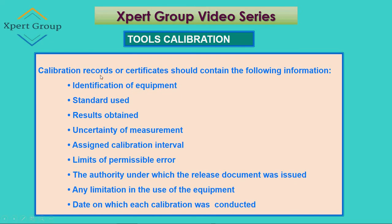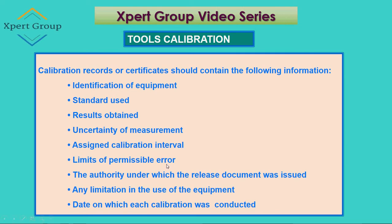Calibration records or certificates should contain the following information: identification of equipment — what type of equipment it is and its specific identification; the standard used — on which standard the calibration is based; result obtained — what the results were after and before the calibration; uncertainty of measurement — if there is any uncertainty, that needs to be mentioned; and assigned calibration interval — when the next due date is coming and when it was last completed.